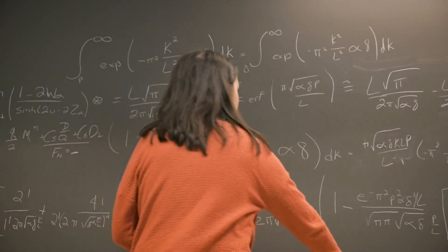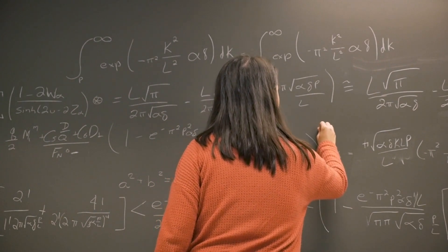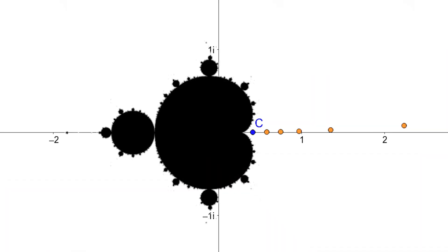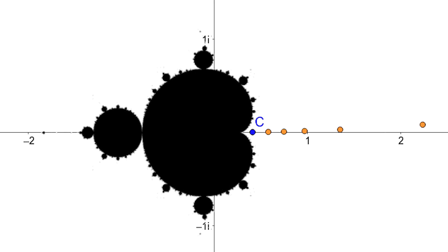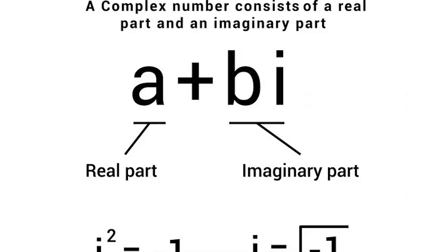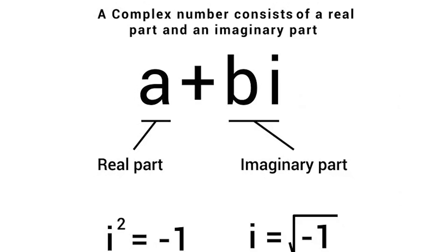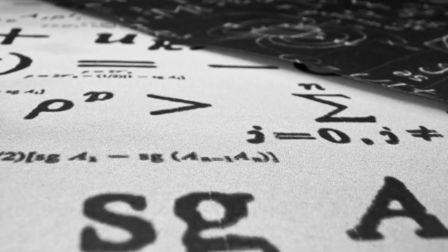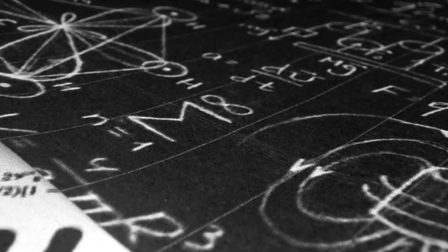The Mandelbrot set is a famous fractal in mathematics, defined as the set of complex numbers c for which the function f(z) = z² + c does not diverge when iterated from z equals zero. In other words, the Mandelbrot set is the set of complex numbers c such that the sequence of values remains bounded. A complex number is a number of the form a + bi, where a and b are real numbers and i is the imaginary unit, defined as the square root of negative one. The real part is a, and the imaginary part is b.